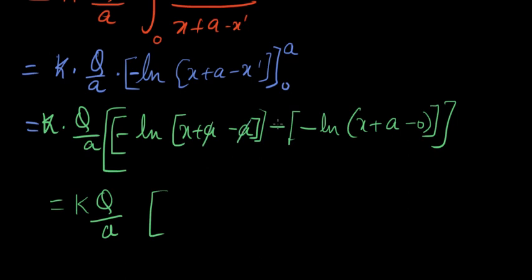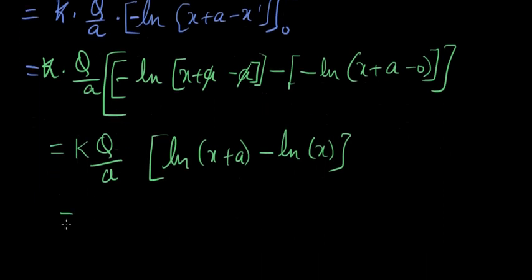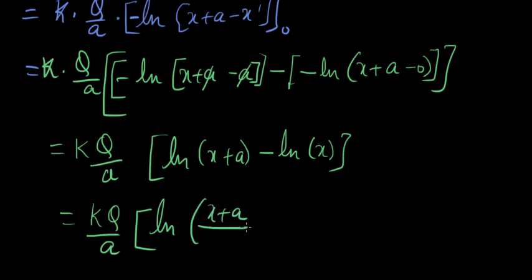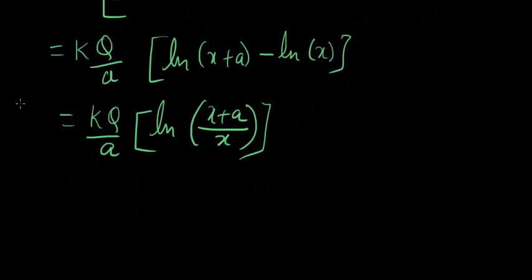What do we get? kQ over a. Here a and a cancel. This is negative times negative is positive. So you get ln of x plus a minus natural log of x. And ln of something minus ln of another thing is ln of that thing over that thing. So x plus a over x. That's it. You have found out the potential at point P.